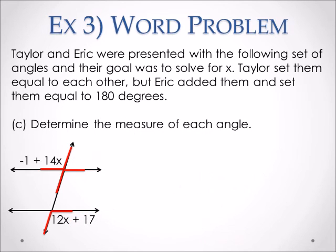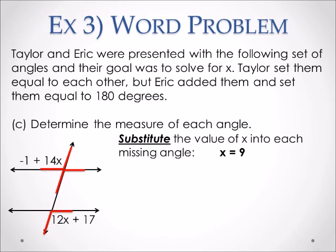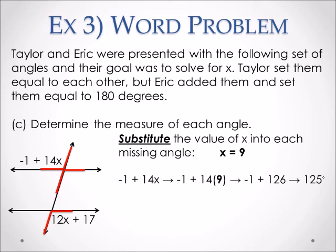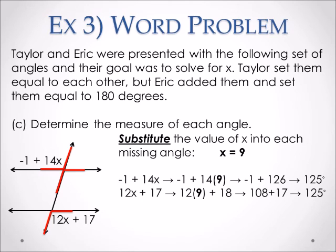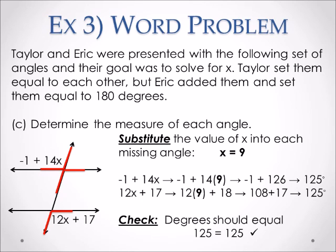For part C, determine the measure of each angle. Since X equals 9, substitute into each expression. For the first angle, negative 1 plus 14 times 9: 14 times 9 is 126, minus 1 gives 125 degrees. Substituting into the second angle also gives 125 degrees, confirming that both angles are congruent, as expected for vertical angles.